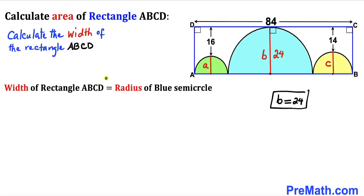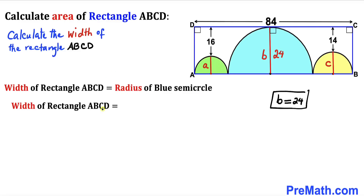Let's recall our earlier observation: the width of rectangle ABCD equals the radius of the blue semicircle. Since we found the radius equals 24 units, the width of rectangle ABCD turns out to be 24 units.